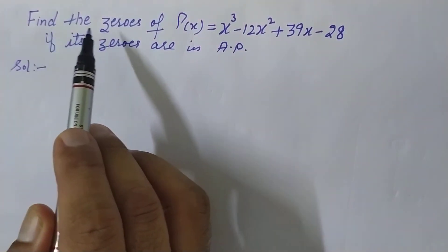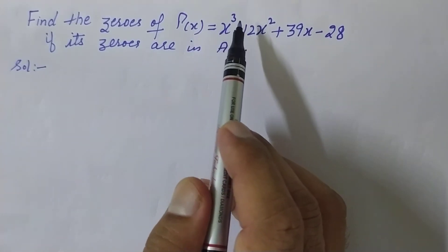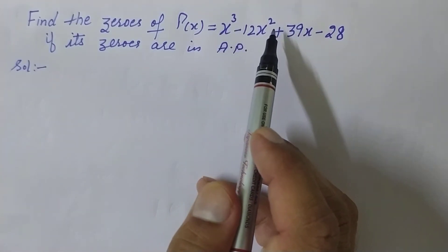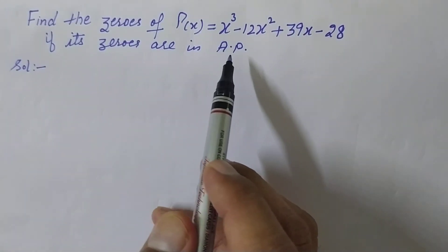Question is: find the zeros of P(x) = x³ - 12x² + 39x - 28 if its zeros are in AP.